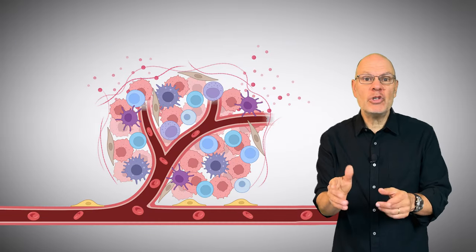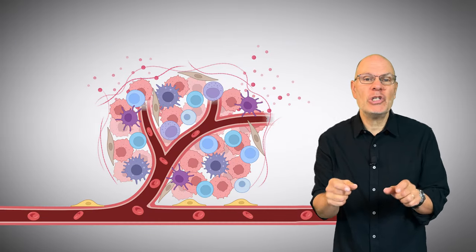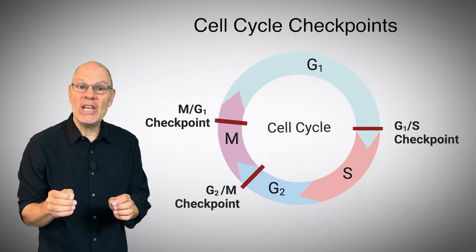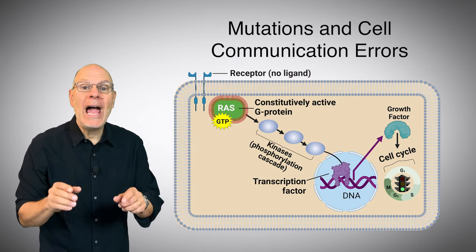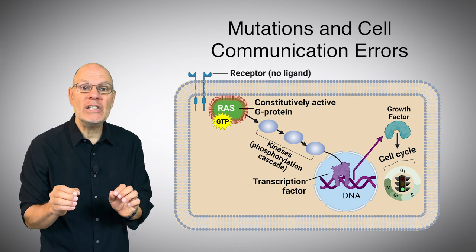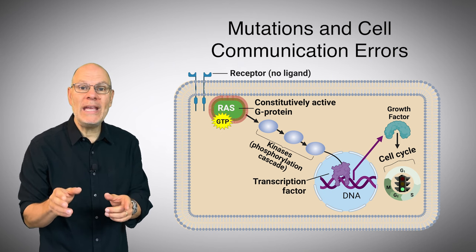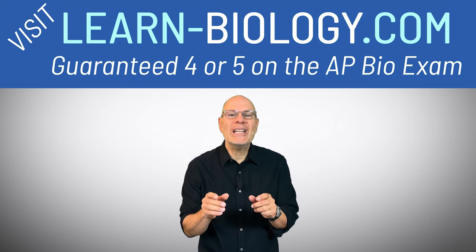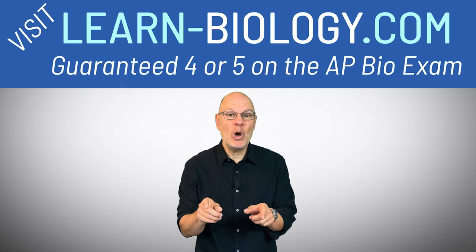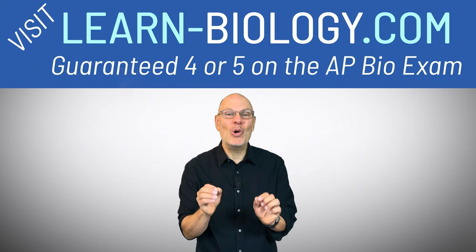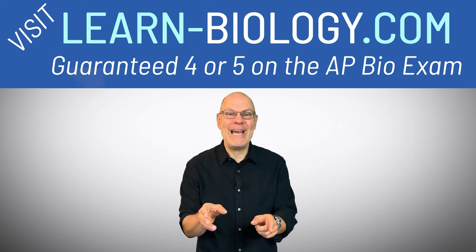As an AP Bio student, what do you need to know about cancer? In this video made expressly for AP Bio, we'll look at: one, how cancer relates to cell cycle checkpoints, and two, how genetic mutations and cell communication errors can prevent cells from obeying these checkpoints, which can result in cancer. Our goal is to let you know exactly what you need to know about cancer so that you can ace your next AP Bio test or get a four or a five on the AP Bio exam.